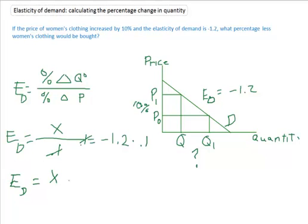So X is equal to negative 1.2 times 0.1 is equal to negative 0.12. In other words, this is going to be a 12%. And we'll put a negative sign. So price went up.